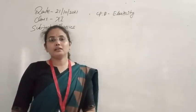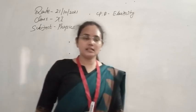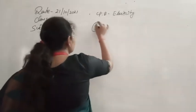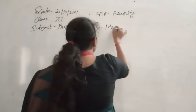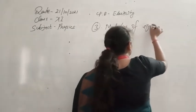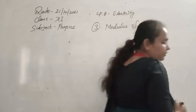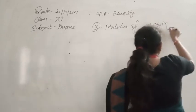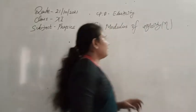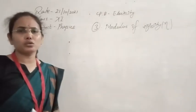So the third type of elastic constraint we have to discuss today is the modulus of rigidity. Let's see what modulus of rigidity is and what kind of elastic constraint it represents. We denote modulus of rigidity by the symbol eta (η), and it is defined just like using Hooke's law.